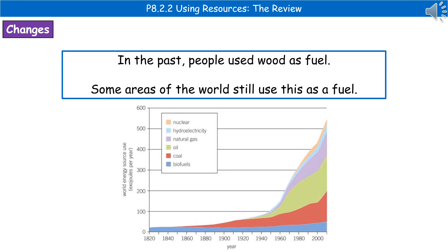The graph here is showing you how different energy sources have changed in their use over time. One of the main energy sources used in the past was wood. Some areas of the world still use wood as a fuel today because it's readily accessible and very cheap compared to importing other fuels that are more costly. We can see in the graph that biofuels, which wood is an example of, have remained pretty low and constant throughout that time.